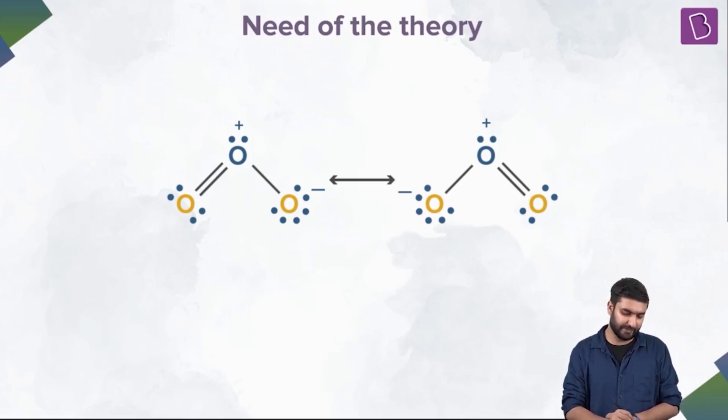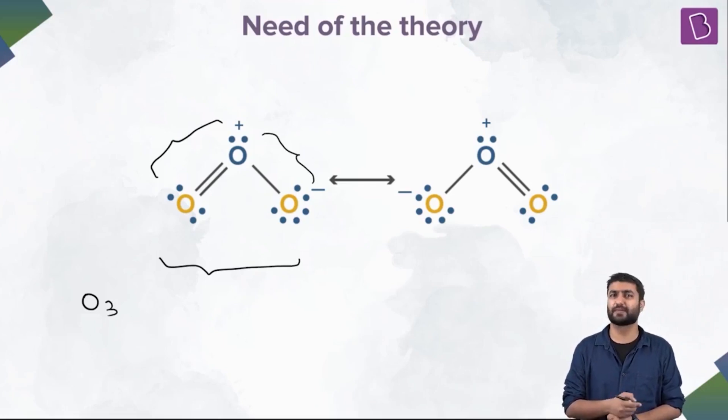For example, take O3. This is O3. You can check that the charges are zero overall on the entire molecule. So if we drew this particular structure, that meant that this particular bond over here was relatively smaller than this bond over here. The bond length, you can get that from the multiplicity of the bond.